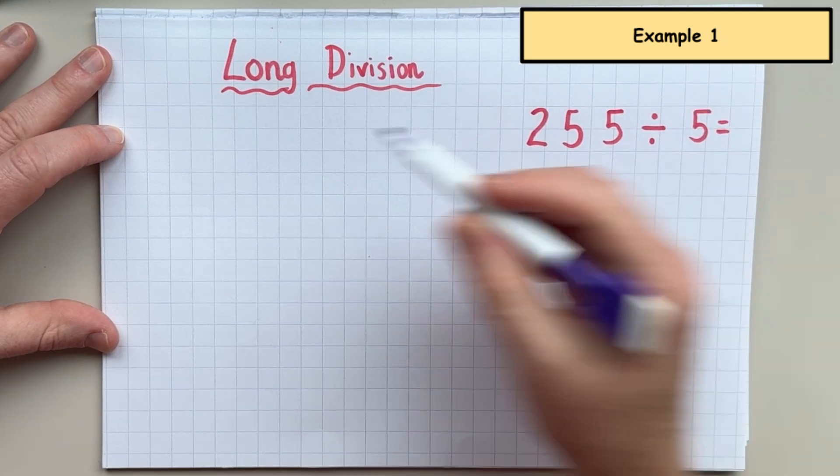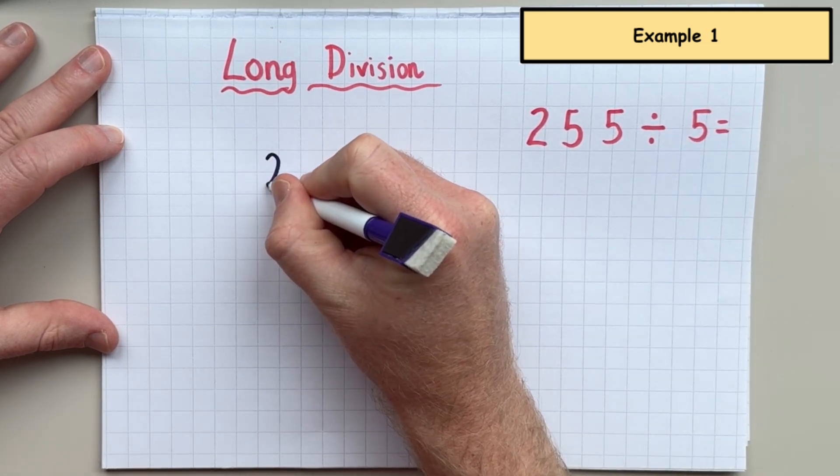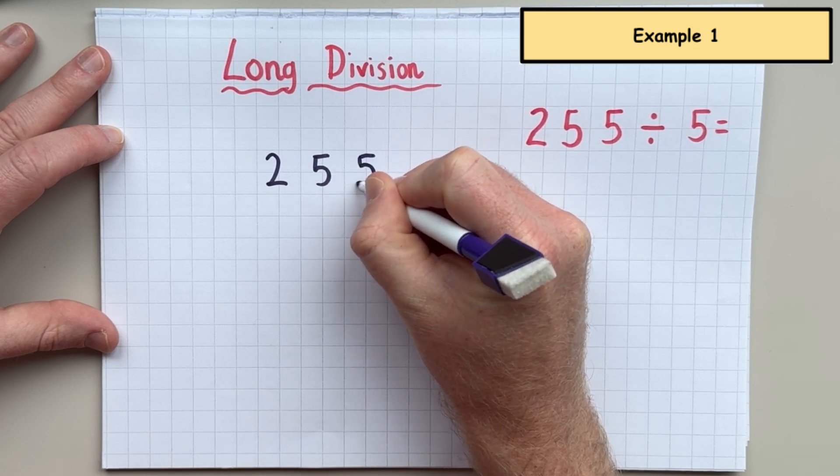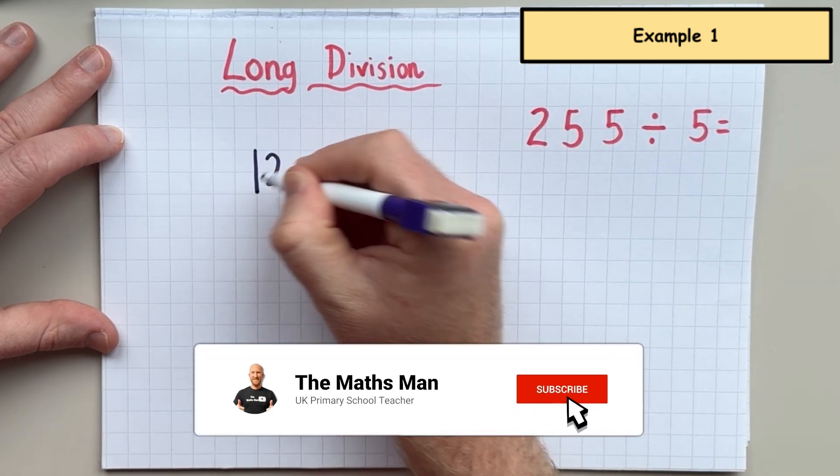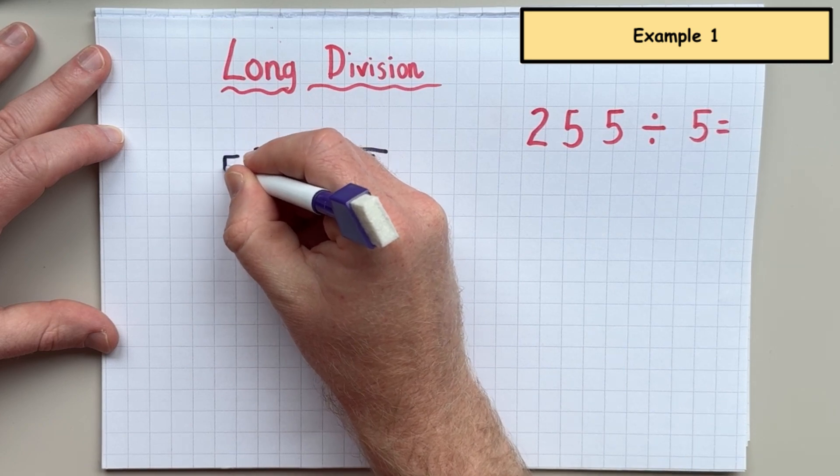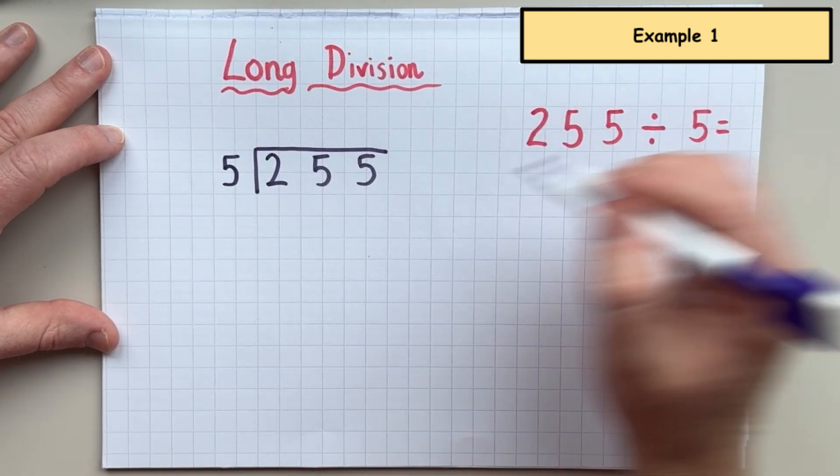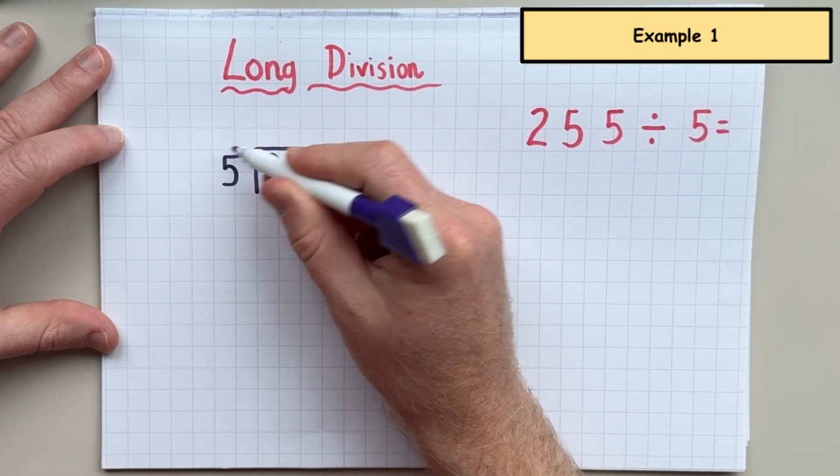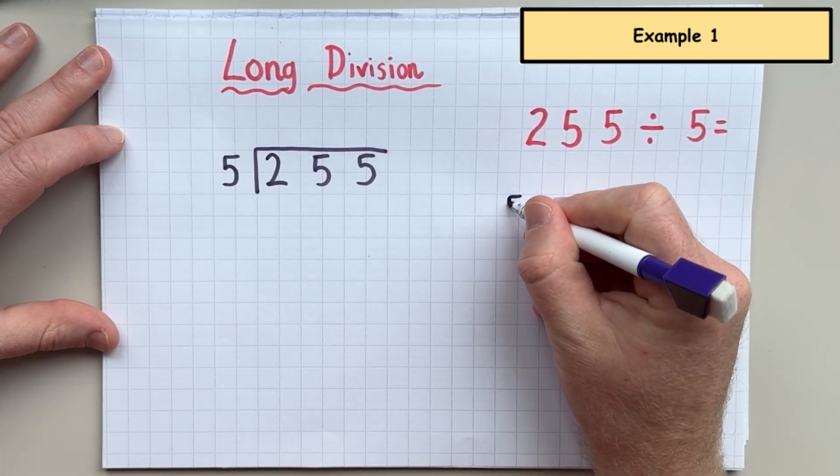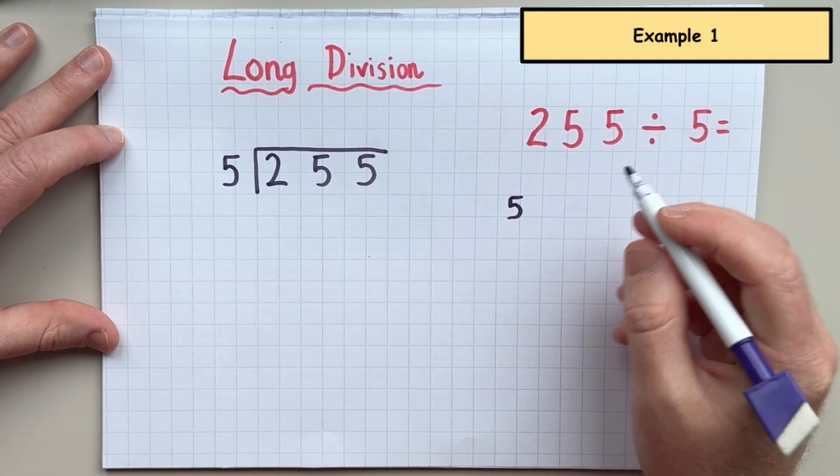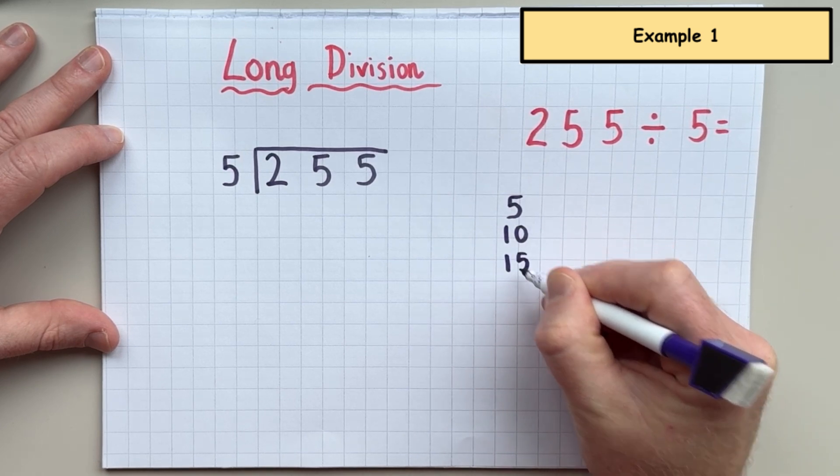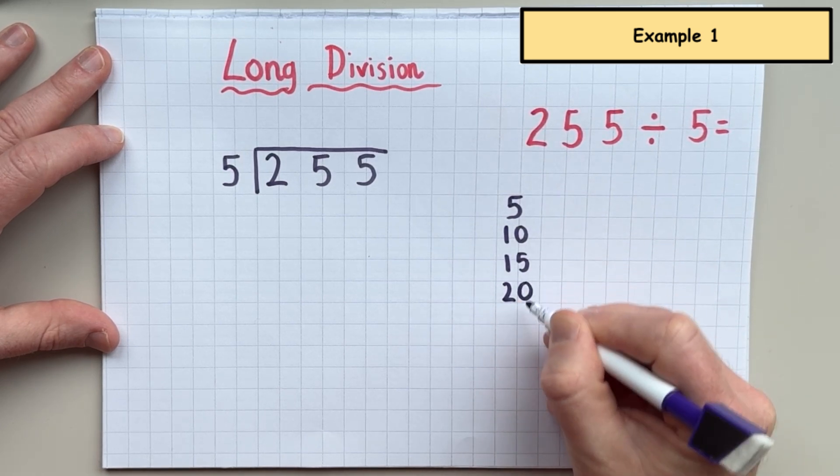So this is the question, 255 divided by five. So the first thing I'm going to do is I'm going to put it in the bus stop method. Now, if you do not know your times table, so if you do not know the five times table, then at the side, before you even begin the question, it's a good idea to write down the times table at the side because it helps a lot.